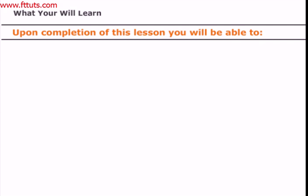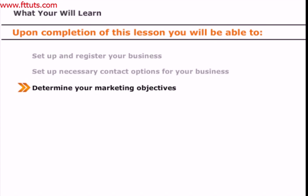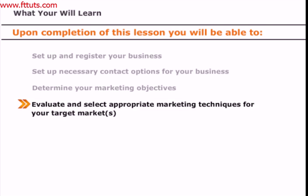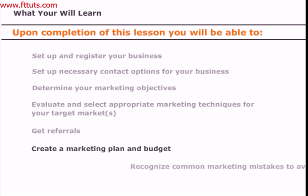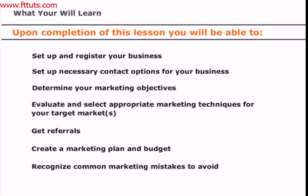In this lesson, Jan and Bob will cover seven key points to starting a business: setting up and registering your business, setting up necessary contact options, determining your marketing objectives, evaluating and selecting appropriate marketing techniques for your target area, getting referrals, creating a marketing plan and budget, and recognizing common marketing mistakes to avoid.